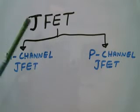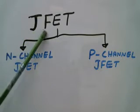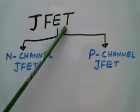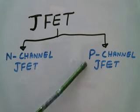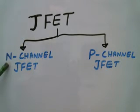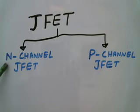Now we'll discuss about JFET, Junction Field Effect Transistor. It is again divided into two types: N-Channel JFET and P-Channel JFET. In N-Channel JFET the majority charge carriers are electrons. Therefore current is due to holes. Since electrons are negative charge, it is called as N-Channel JFET.